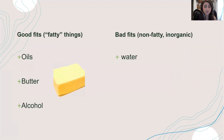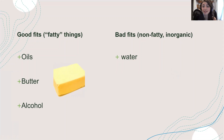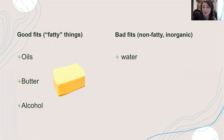As a recap: good fits for cannabis extraction are fatty things like oils, butters, and alcohols — fatty substances usually contain lots of carbons and hydrogens. Bad fits are non-fatty, inorganic molecules like water. So when making edibles, we're looking to use fatty substances. I hope this video helped — if it did, please subscribe to the channel and thank you for your support.